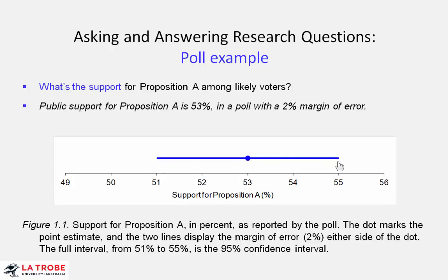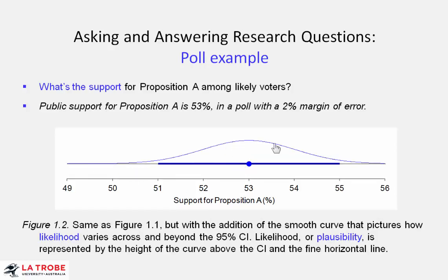This interval is our interval estimate of the support for this proposition in the whole population of all likely voters. I can draw a line on our interval estimate here, and that gives us an indication of the plausibility or relative likelihood that the true value is at these particular points in this interval. Round about the centre, around about 53, is our best bet for where the true value in the population lies. Up around 54 to 55, or down at the lower end, are relatively less plausible values. But notice that even just beyond this interval estimate, there's still a little bit of plausibility. This interval we call the 95% confidence interval, because calculated from our data, we can be 95% confident that the true value lies in this interval.